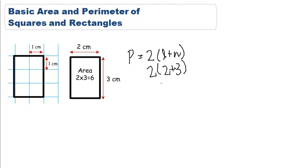We know 2 plus 3 is 5, and 2 times 5 equals 10 centimeters. We would have gotten the same thing if we did 2 plus 3 plus 2 plus 3.